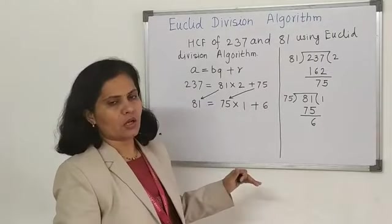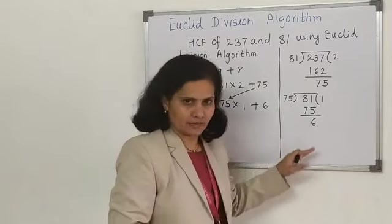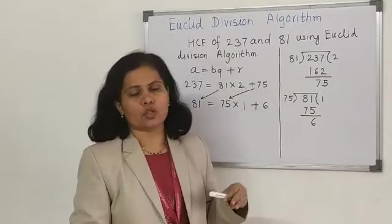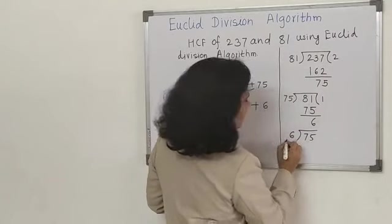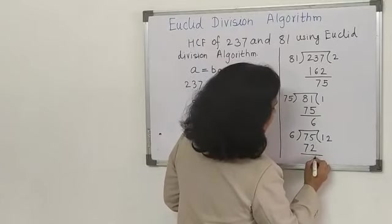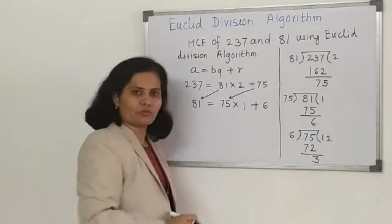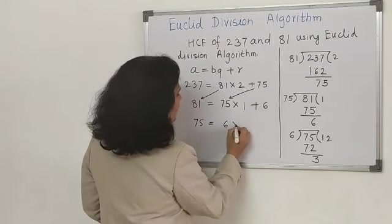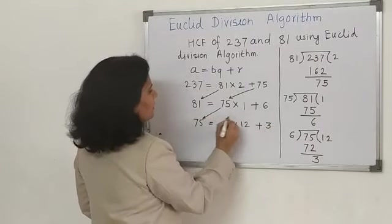In the third stage, the divisor will become the dividend and remainder will become the divisor. You have to continue this process until the remainder value becomes zero. We will divide 75 by 6. The remainder is 3. The dividend is 75, divisor is 6, quotient is 12, and remainder is 3.